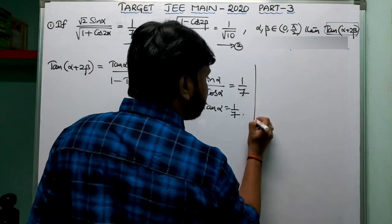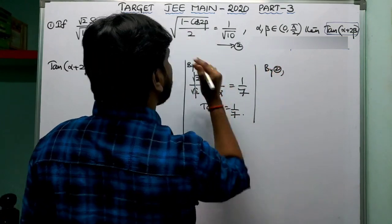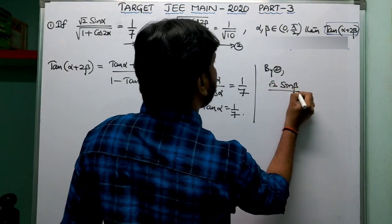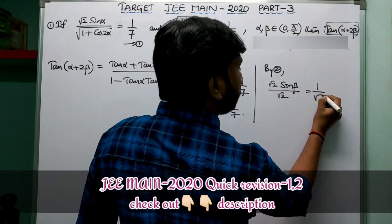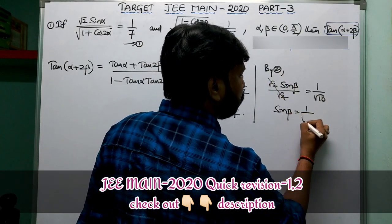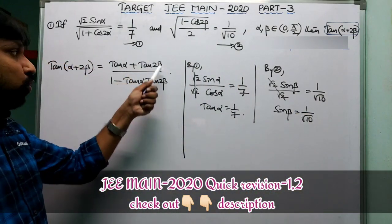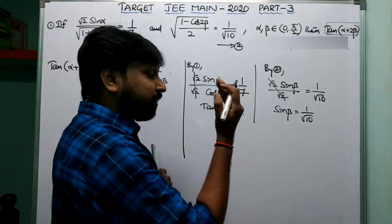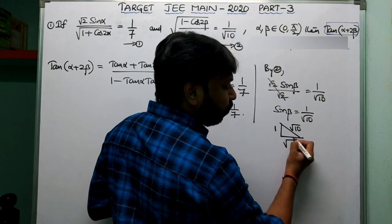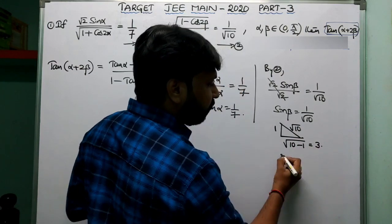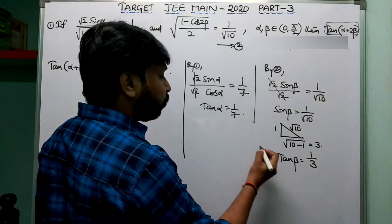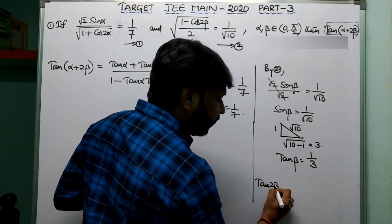Coming to the second equation: 1 − cos 2β = 2sin²β, so root(2sin²β / 2) = sin β = 1/root 10. Since β is in the first quadrant, sin β = 1/root 10. Now we need tan 2β, so first find tan β using a right angle triangle: opposite = 1, hypotenuse = root 10, so adjacent = root(10 − 1) = root 9 = 3. Therefore tan β = 1/3.